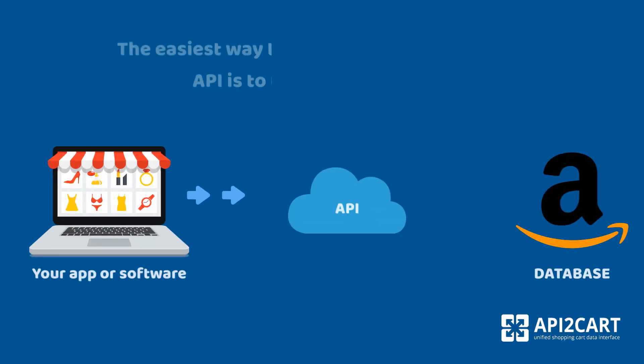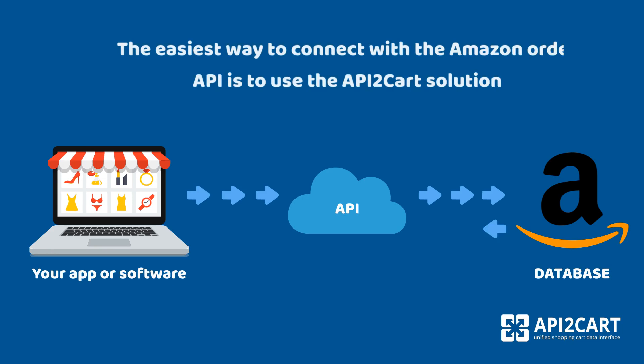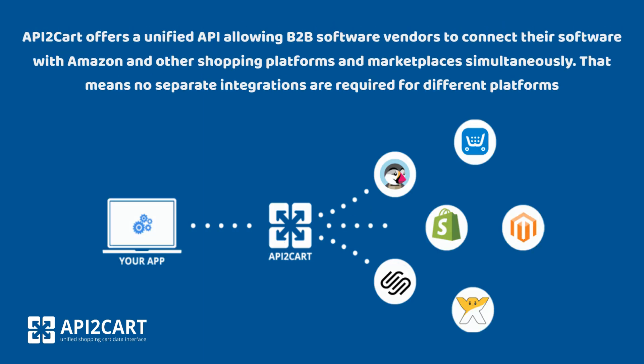The easiest way to connect with the Amazon Order API is to use the API 2 Cart solution. API 2 Cart offers a unified API allowing B2B software vendors to connect their software with Amazon and other shopping platforms and marketplaces simultaneously — meaning no separate integrations are required for different platforms.